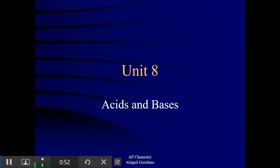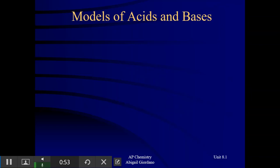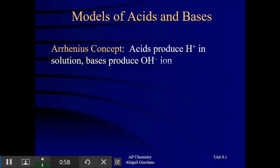We're starting this new unit on Acids and Bases, and we're going to start off with a little bit of review — mostly on vocabulary. Reviewing back from what was likely your definition of acids and bases from your Chem 1 days: the Arrhenius concept, where acids produce hydrogen ions and bases produce hydroxide ions. It's not that that concept is wrong; it's just not complete.